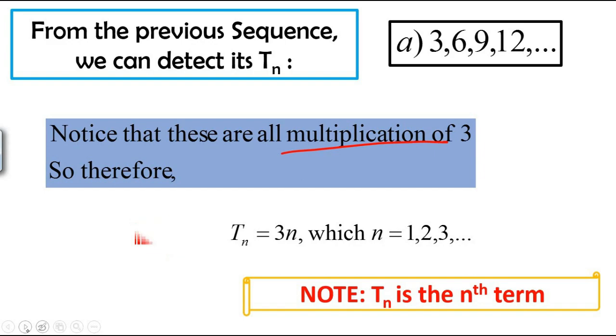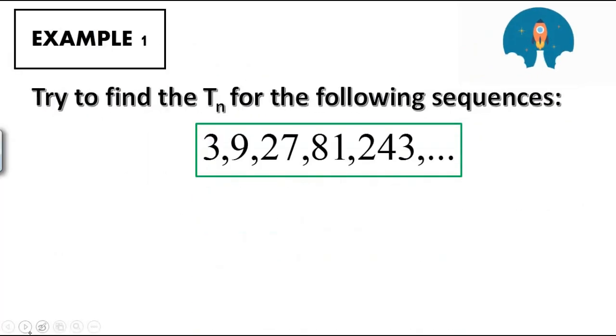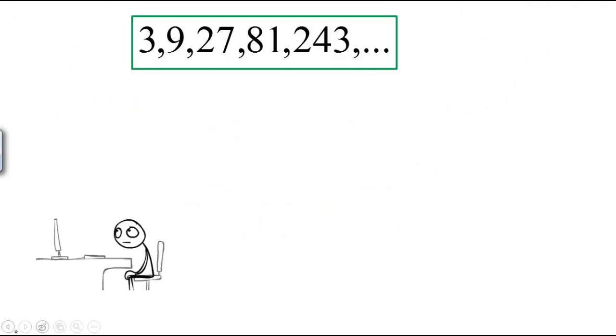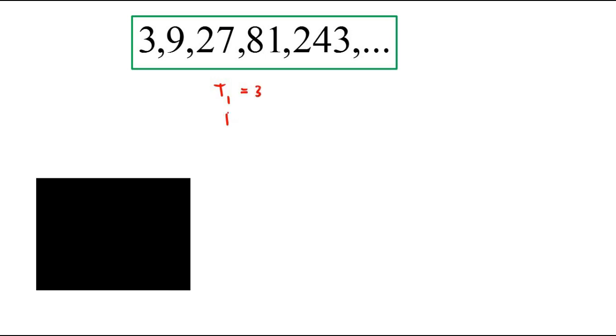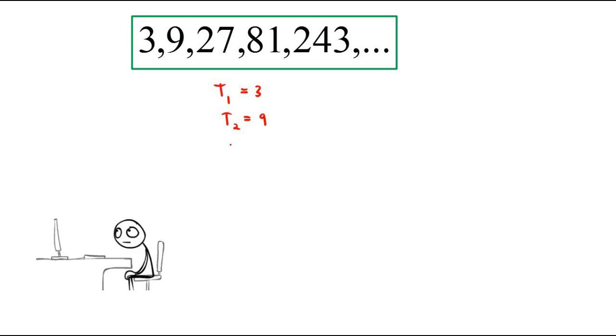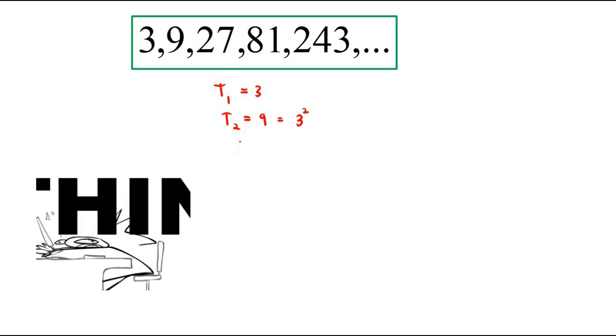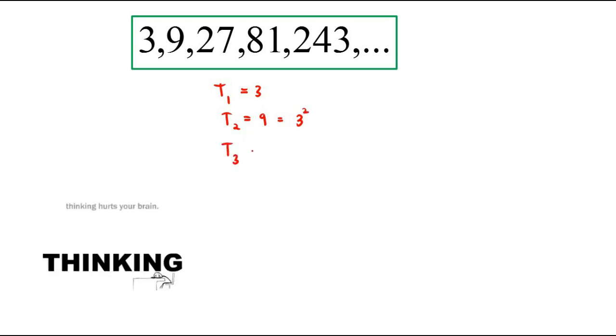Let's look into our first example. Find the Tn for this following sequence: 3, 9, 27, 81, 243, and so on. Please note that there are common patterns here. Our T1, our first term, is 3. Our second term is 9, which at the same time is 3 squared.